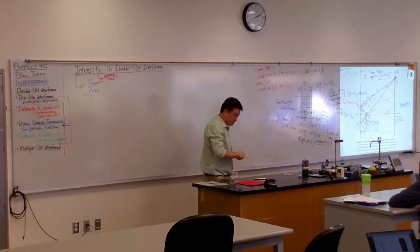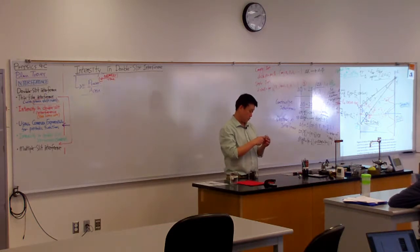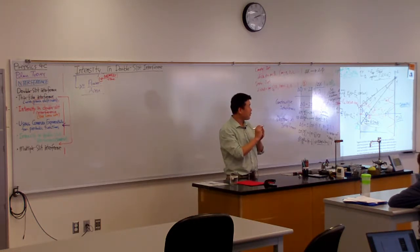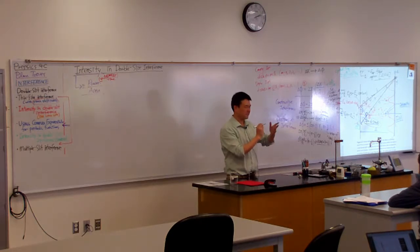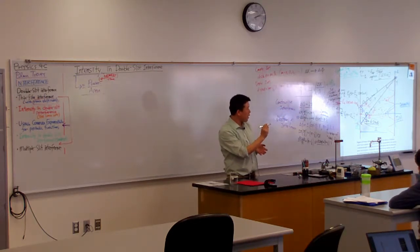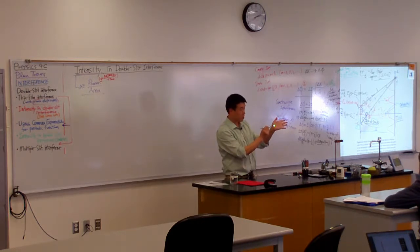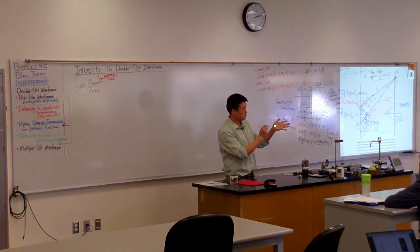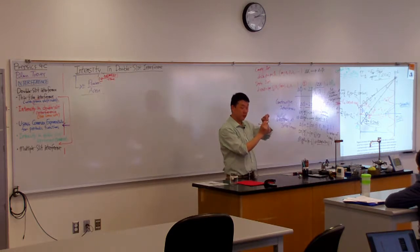So this laser pointer, it has a power of, I can't read, it says max output power less than 5 milliwatt. So it has a power of 5 milliwatt, let's say, if it's at maximum. So that's the power that's in this entire light beam. But depending on where you are looking at this light beam, the size of the light beam actually changes. Near my hand, it's probably diameter 5 millimeters, 3 millimeters. But as you go farther away, even though this is a well-collimated laser beam, if you go far enough away, it gets bigger.